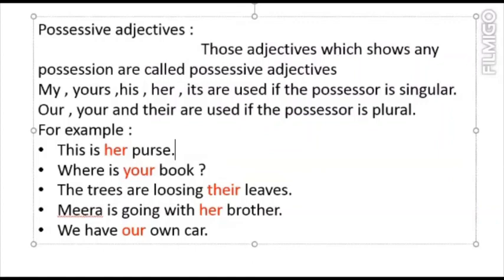Those adjectives which show the possession of something — to whom a thing belongs — are called possessive adjectives. I hope you have understood all the different kinds of adjectives clearly. You can note them down in your copies with examples. In the next video I will give you some exercises related to these adjectives and their kinds. Stay safe, stay home, and bye.